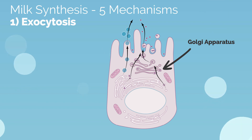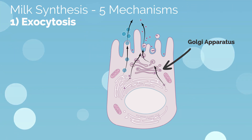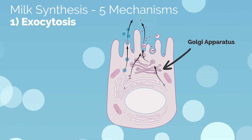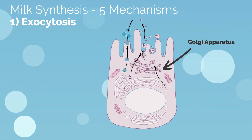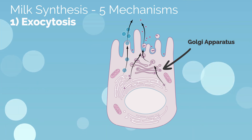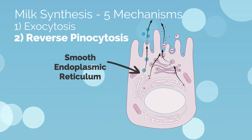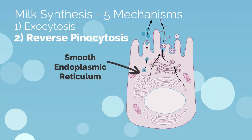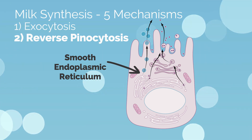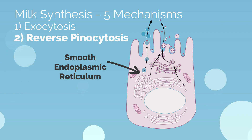Exocytosis is the first mechanism for milk synthesis. It involves the Golgi complex forming vesicles that transport protein and lactose to the alveolar lumen. Water and electrolytes follow the lactose into the vesicle and are also secreted into the lumen. The second mechanism is reverse pinocytosis and is the main pathway for lipids and phospholipids to be added to the breast milk. This process occurs in the mammary glands.